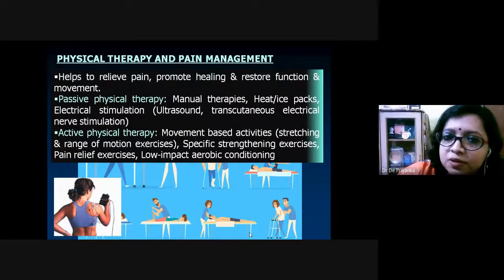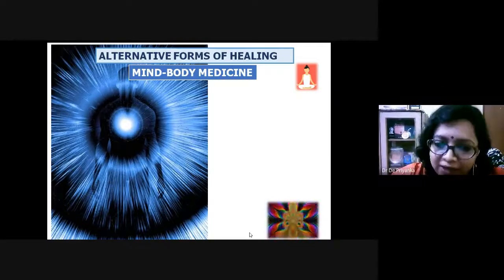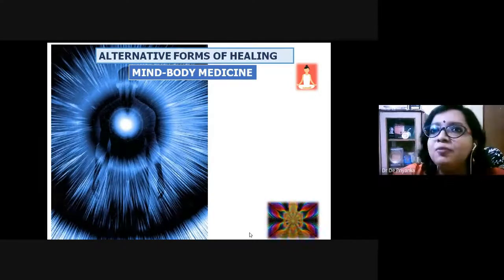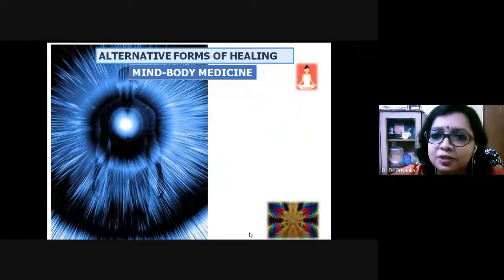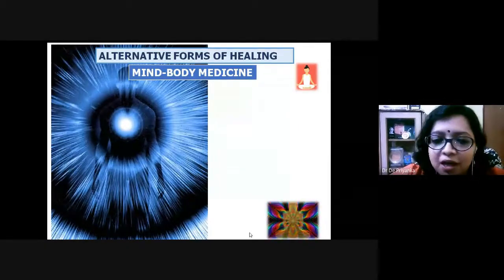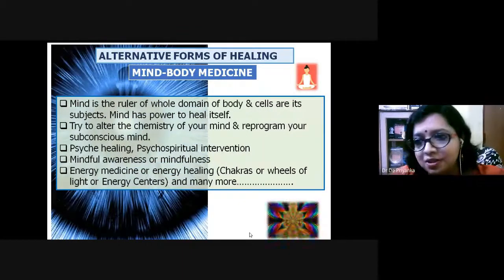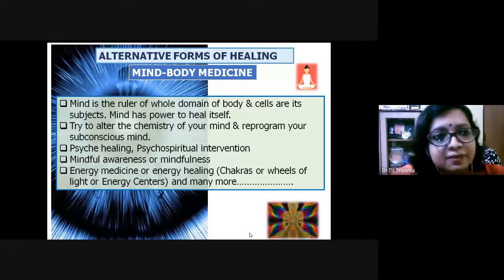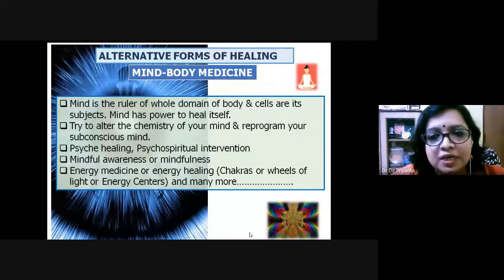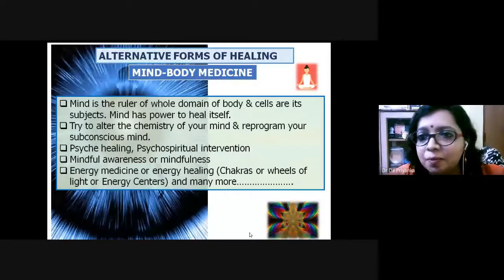Alternative forms of healing include mind-body medicine. The concept is that the mind is the ultimate ruler of the entire body — cells are subjects of the mind. If the mind provides positive guidelines and affirmations to cells, the cells have the power to heal. It has been observed that bad cells can be obliterated and good cells become dominant through positive affirmation of the mind. This is the importance of mind-body medicine.